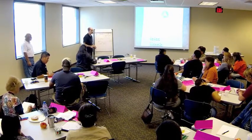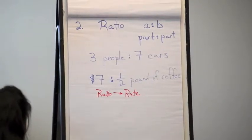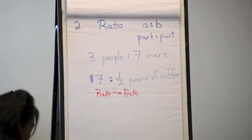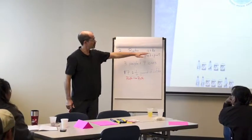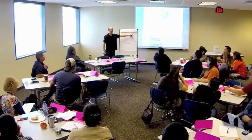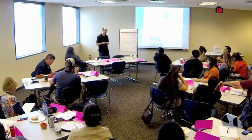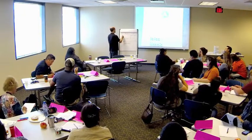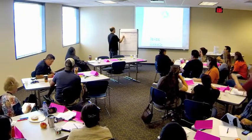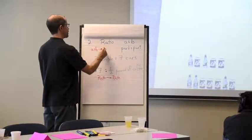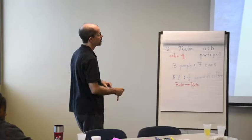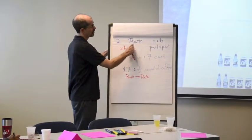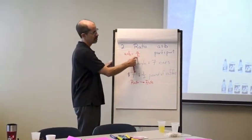Rates are something that we use a lot in math — cost, usually it's a cost of something, like $3 for an hour of parking. Notice with ratios, oftentimes we write it with a colon between the two numbers. But we can also write it in this way, and we saw that with the part-whole also. What do we usually call a number over a number?